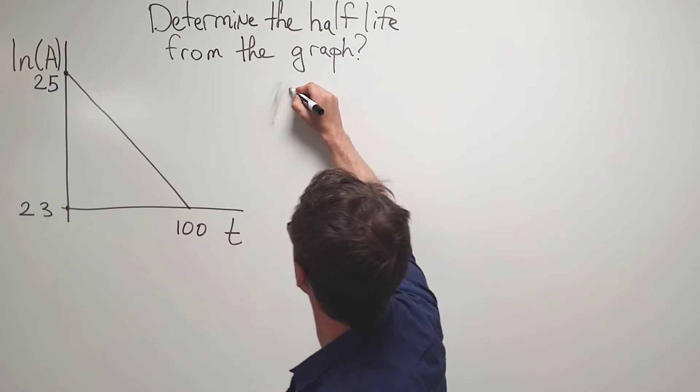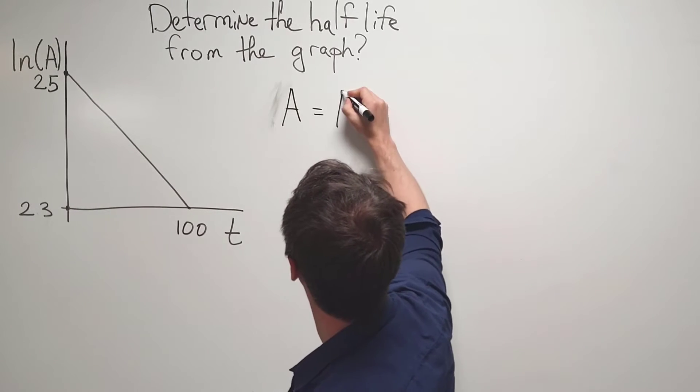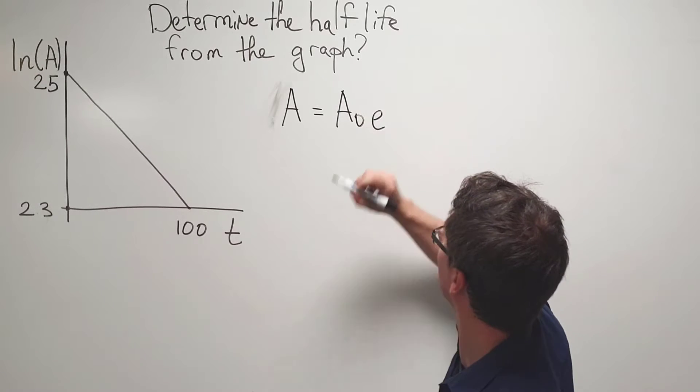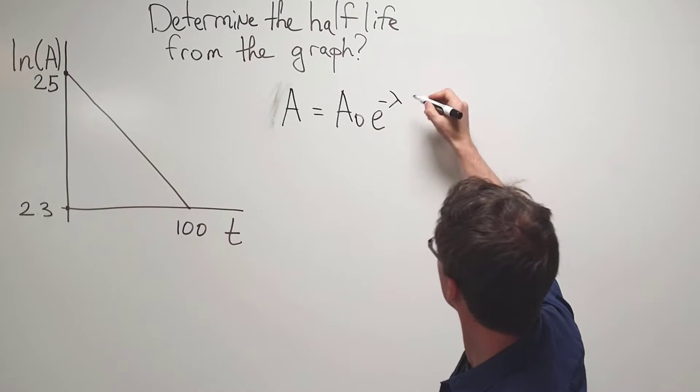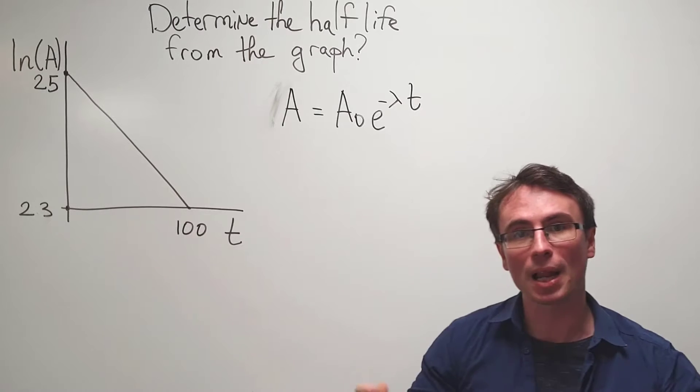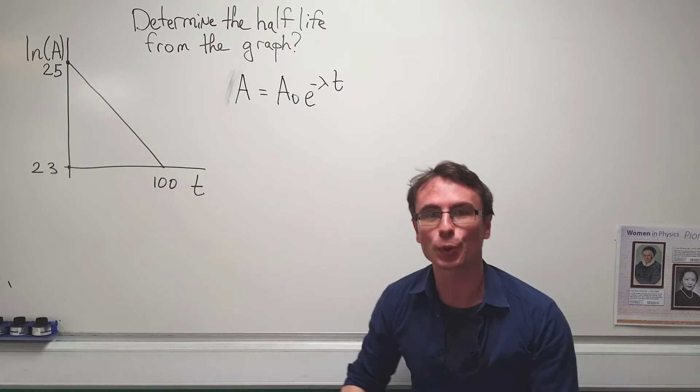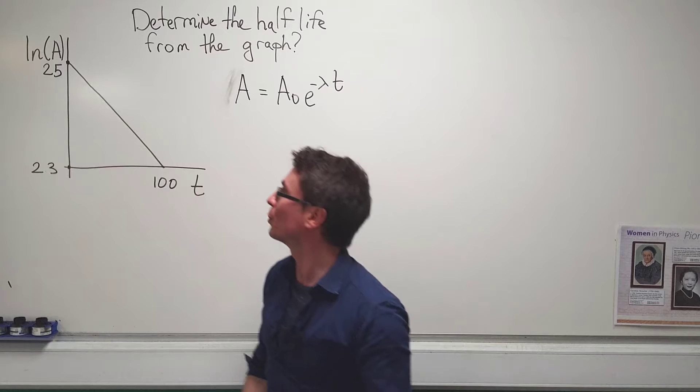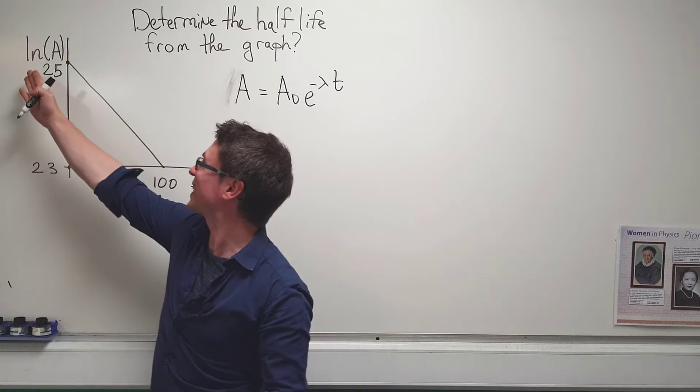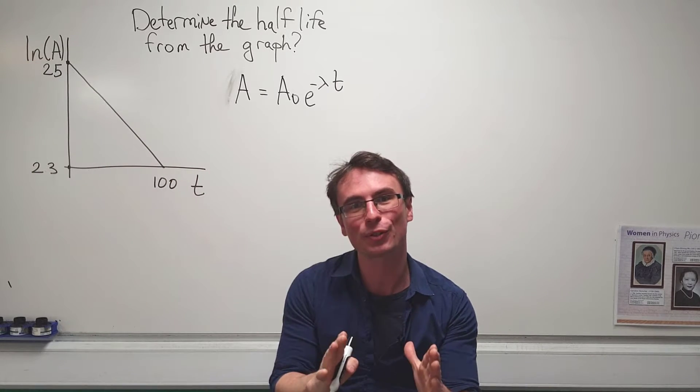Our governing equation in this case is simply that the activity is equal to the initial activity multiplied by the exponential of the negative decay constant multiplied by time. Any time we have a graph, the first thing to do would be to manipulate the expression until we get to whatever is on the y-axis.